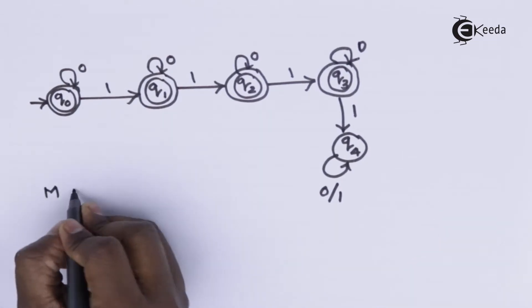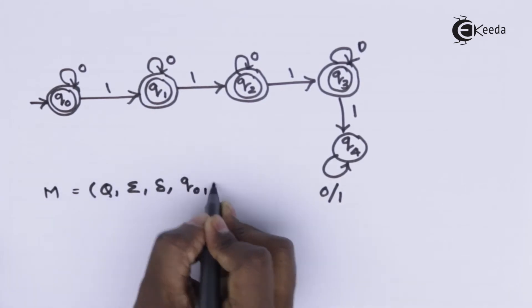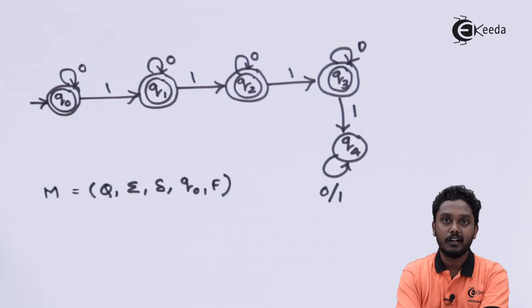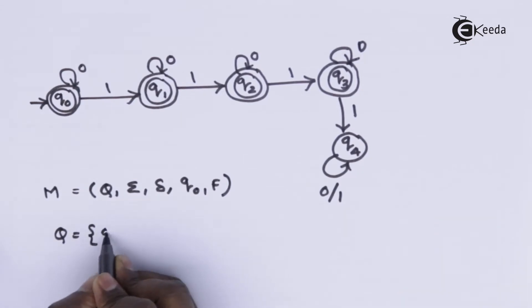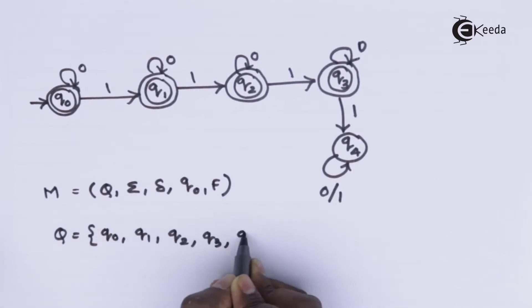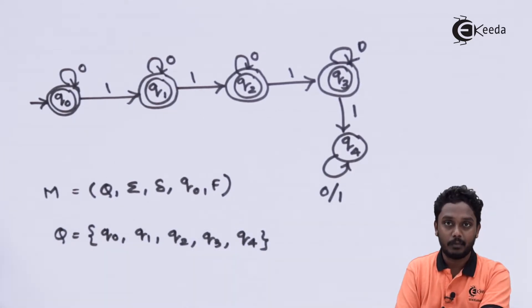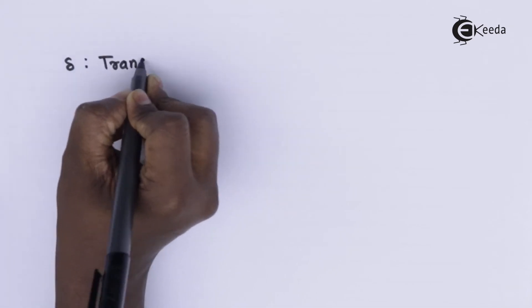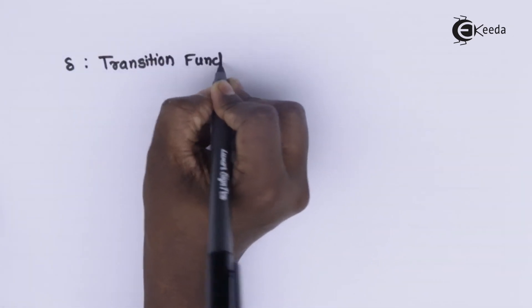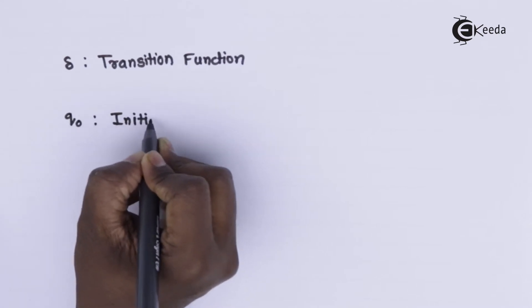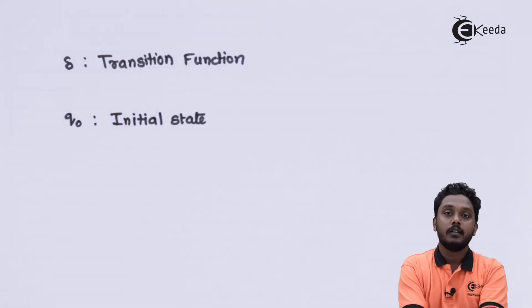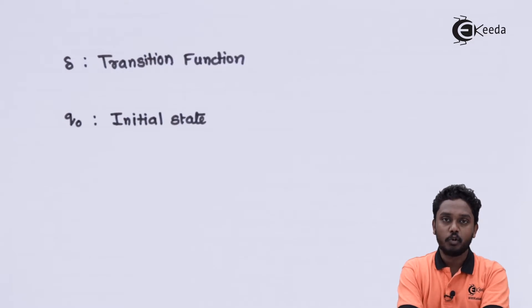Naming this machine M, the components are Q, sigma, delta, q0, and F. The set of states Q contains q0, q1, q2, q3, and q4. Sigma is the binary alphabet. Delta is the transition function. q0 is the initial state. The set of final states F contains q0, q1, q2, and q3.